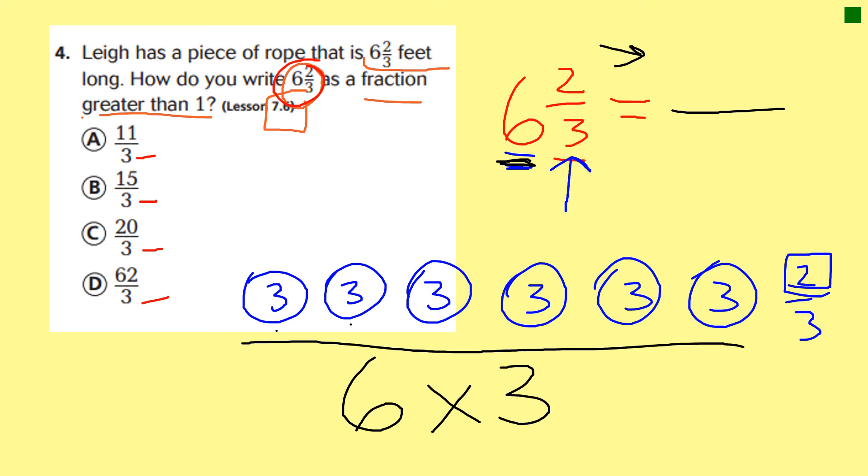So, we have 6 sets of 3. Because when we write a fraction greater than 1, this top number is going to be all the pieces, including all the pieces that that whole number makes. So, 1, 2, 3, 4, 5, 6. There's 3 in each group. So, we have 6 groups of 3. And what else do we have? Plus, those 2 little boogers over there. Those 2 extra pieces from the 2 thirds.